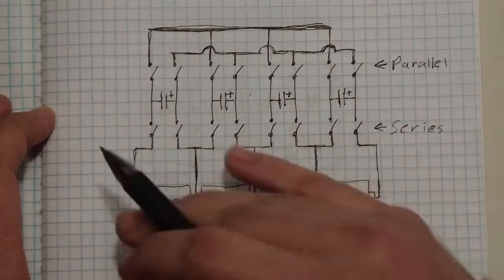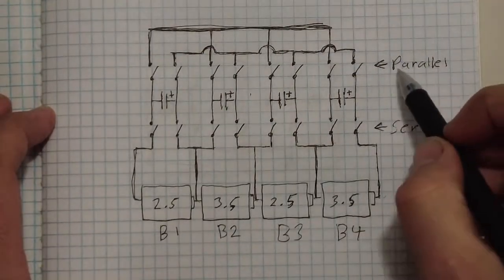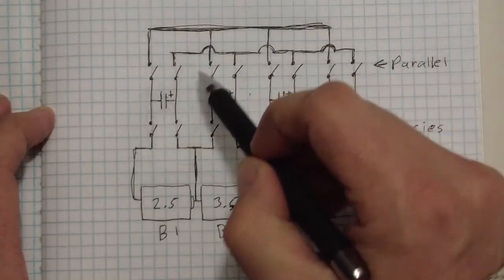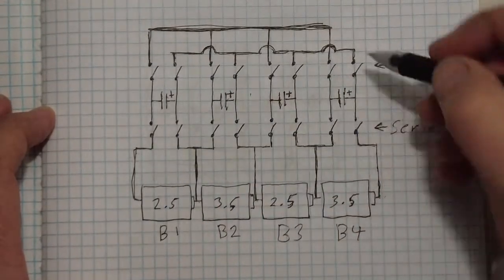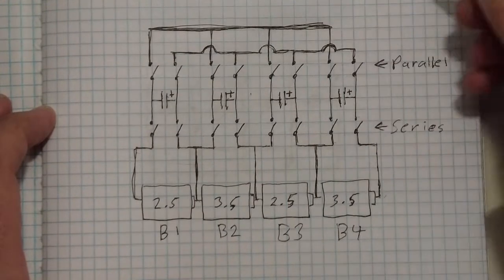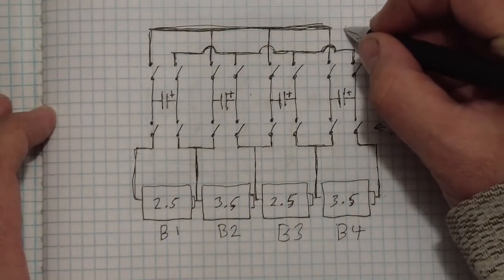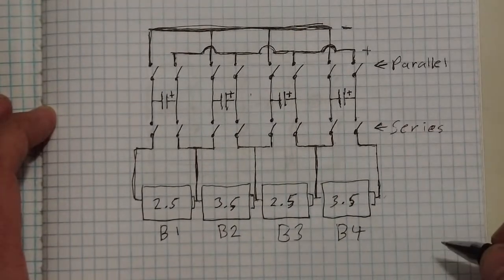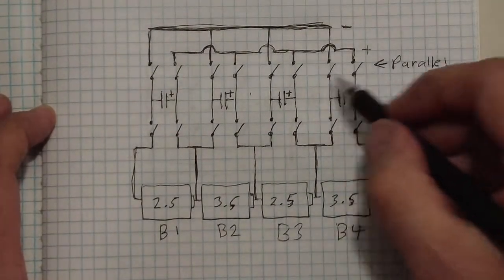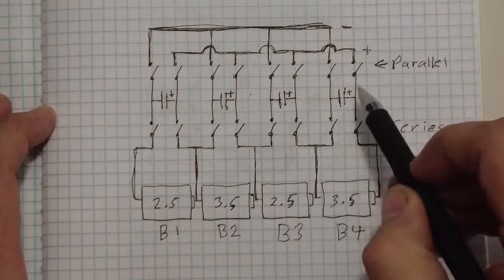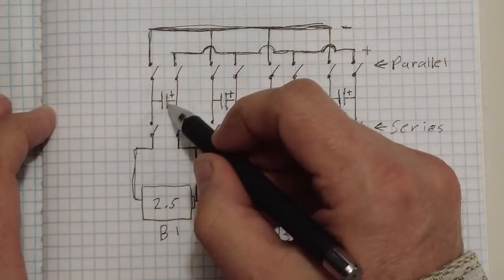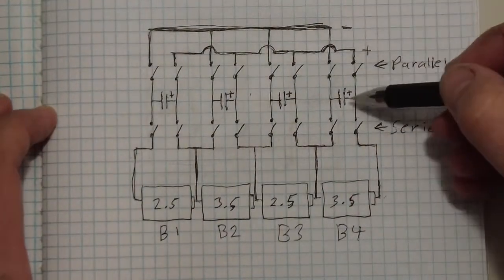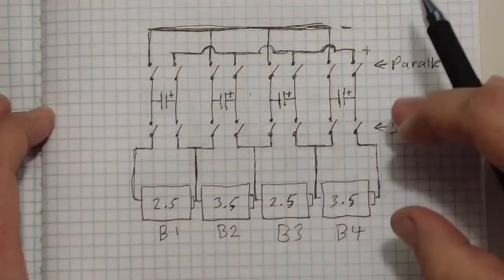Then the series switches will open again, the parallel switches will close. So when all these close, it puts these capacitors in parallel. As you can see right here, there's a negative bus there, and then this is a positive bus. So when these close, these all go in parallel. So this capacitor will be at 2.5, 3.5, 2.5, 3.5. When these go in parallel, these capacitors will equalize.